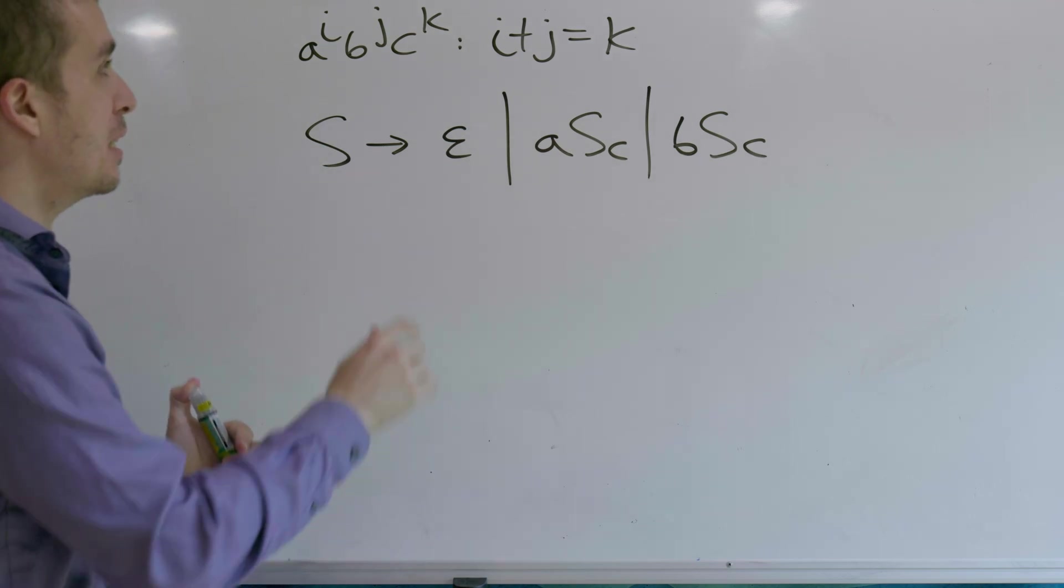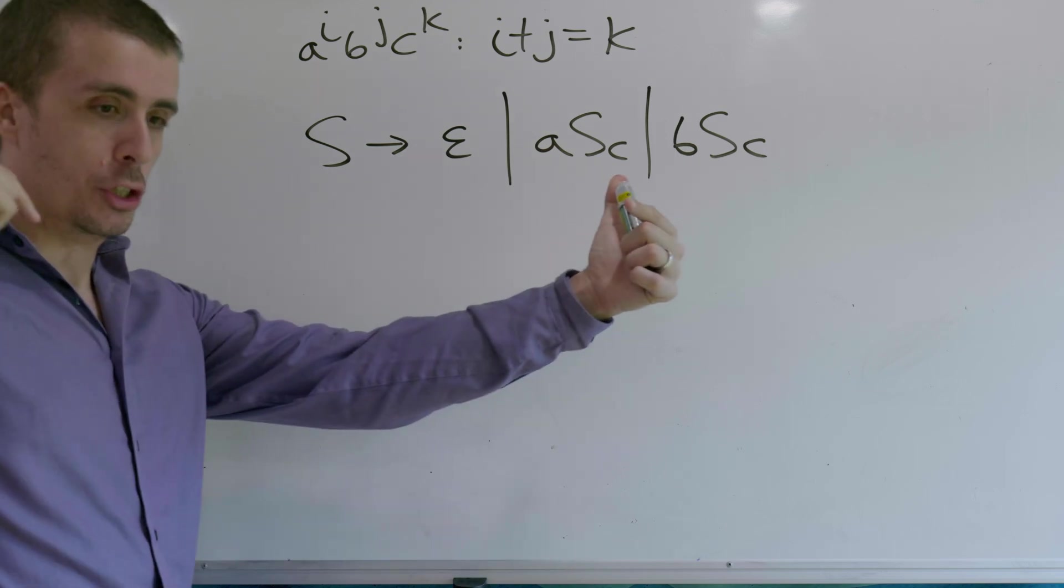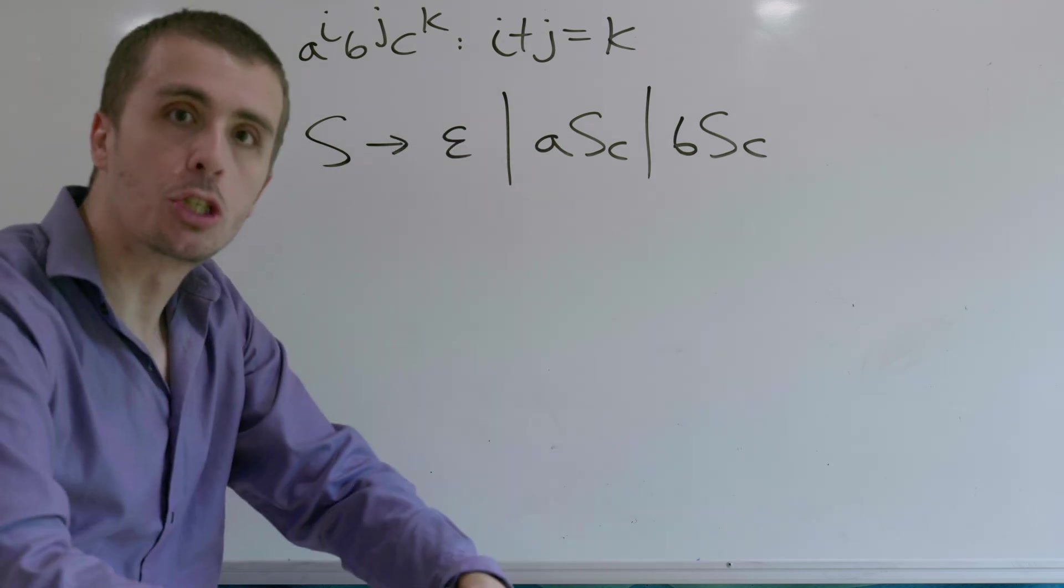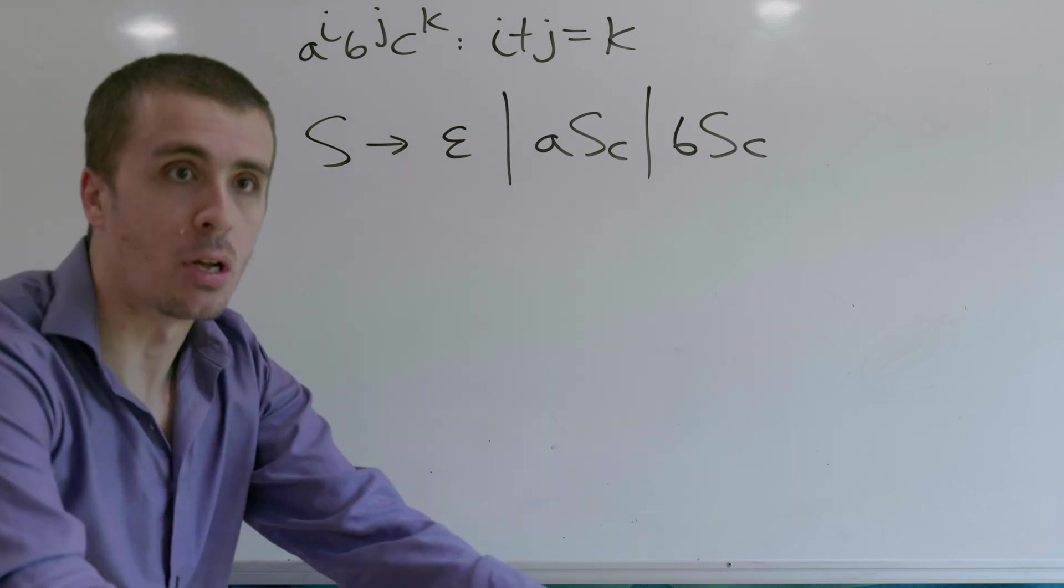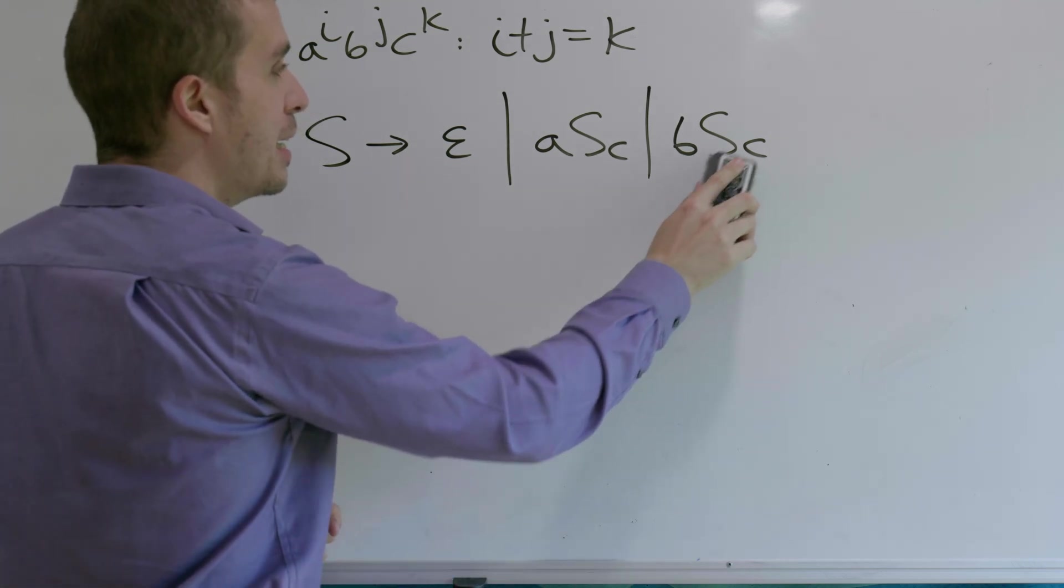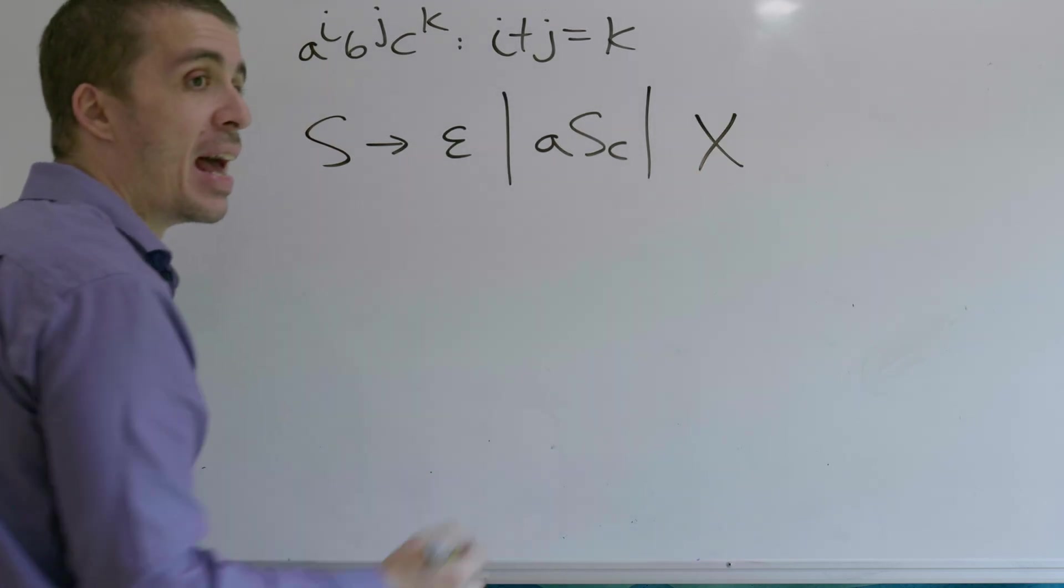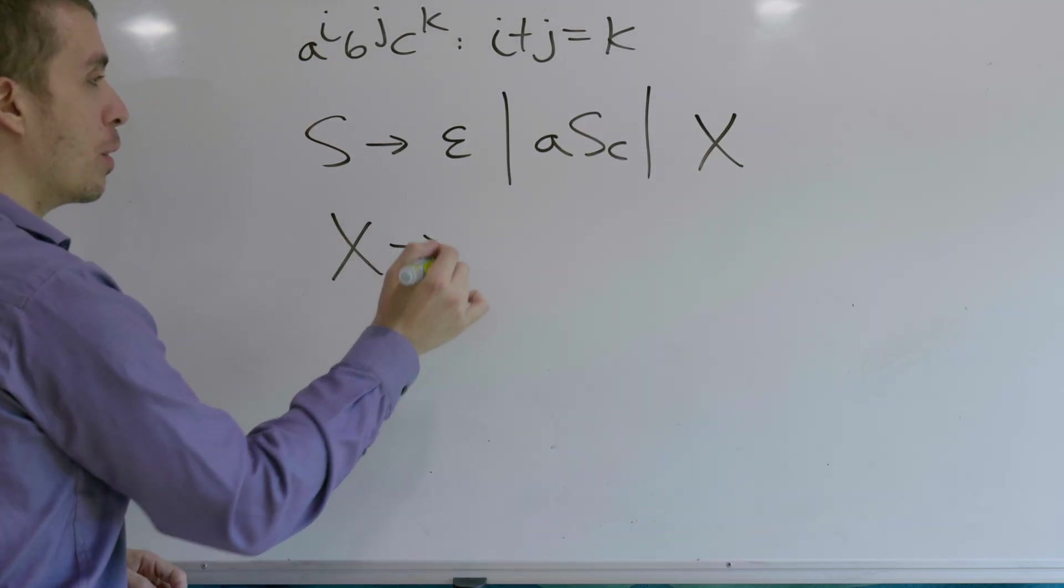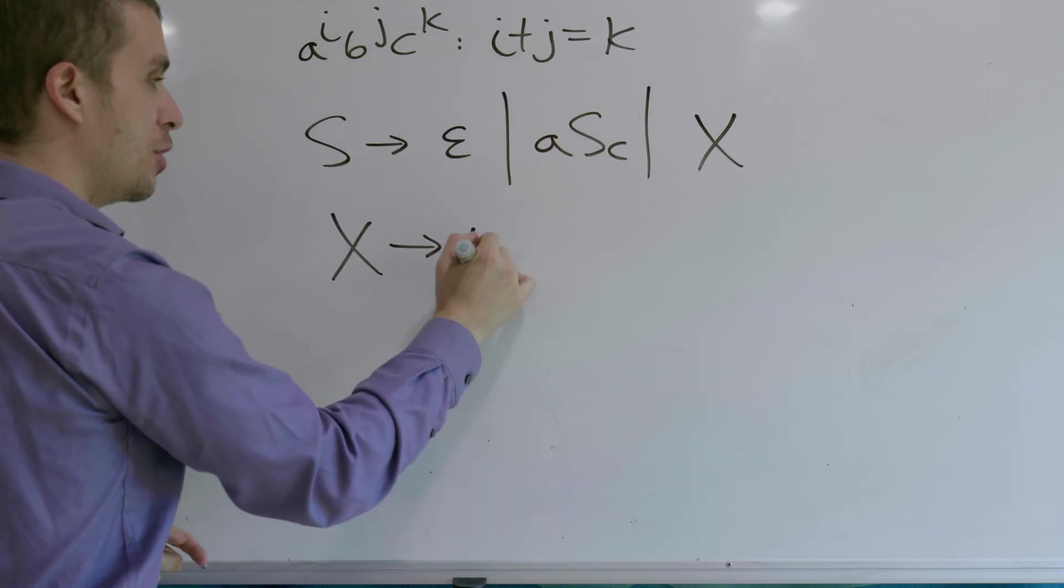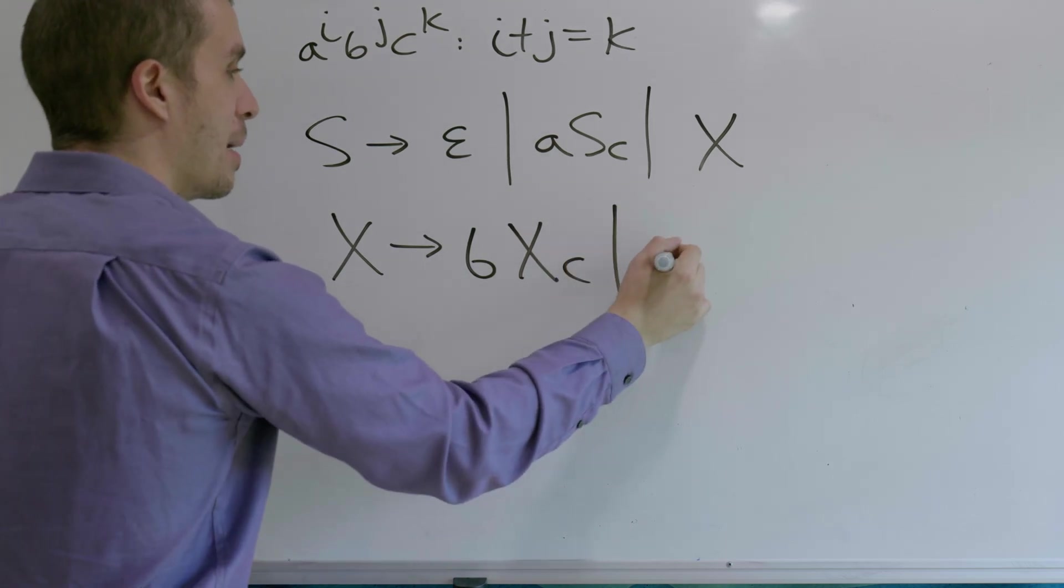So the way that we can think about this is that since the a's are at the beginning, what we can do is do all the a work first, and then once we're done, switch to a different variable, which makes all of the b's, and then we're done at that point. So instead of doing this, let's switch over to a different variable, let's call it x, and then x is going to do the similar thing, but for the b's. So let's do b x c, or empty.